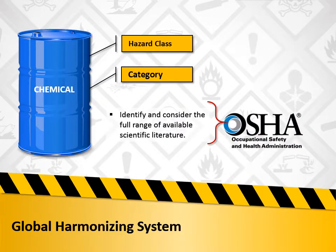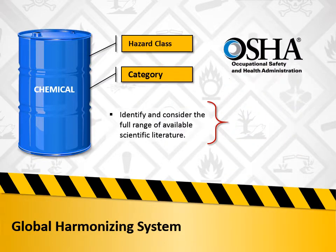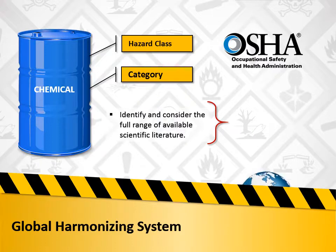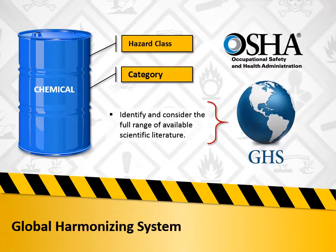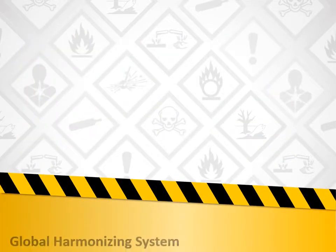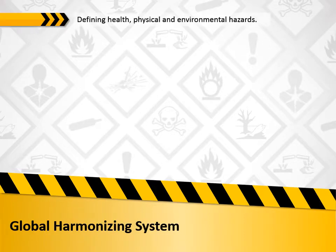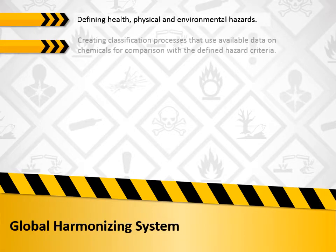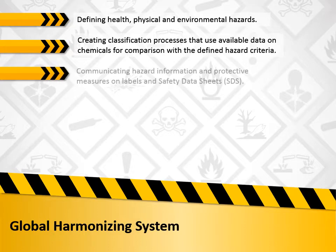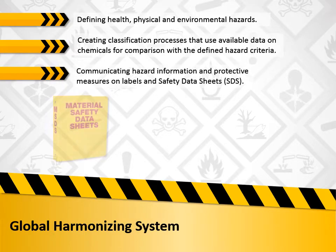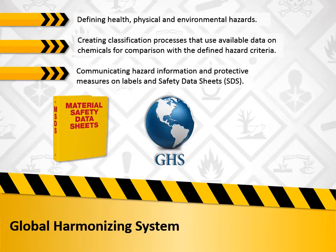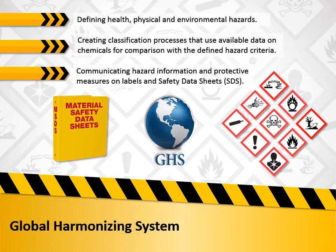OSHA has adopted the Globally Harmonized System, GHS, for hazard communication. GHS is a logical and comprehensive approach to defining health, physical, and environmental hazards, creating classification processes that use available data on chemicals for comparison with the defined hazard criteria, and communicating hazard information and protective measures on labels and safety data sheets.